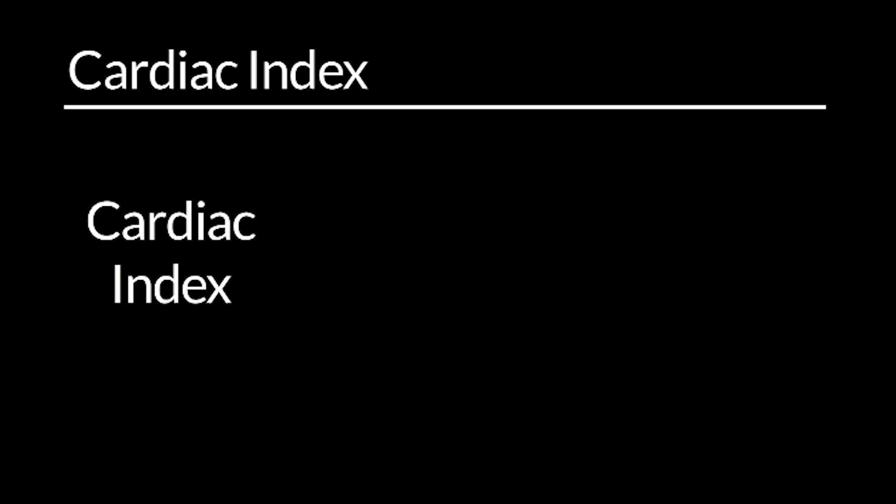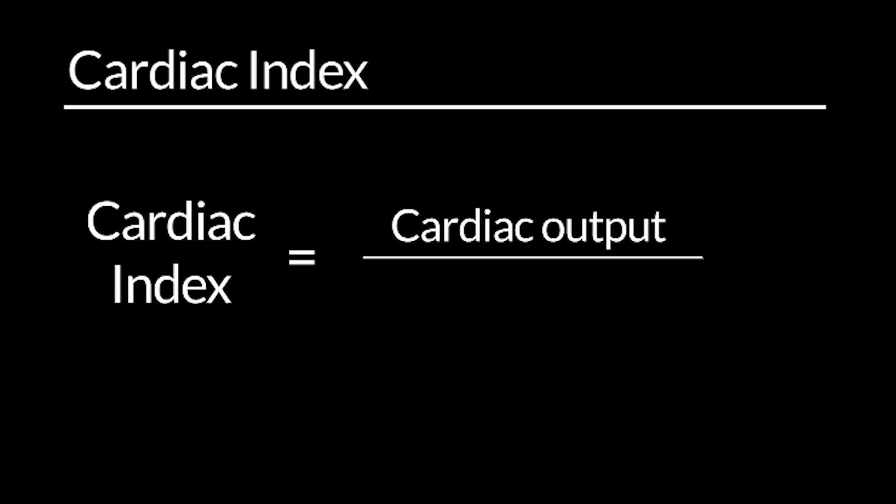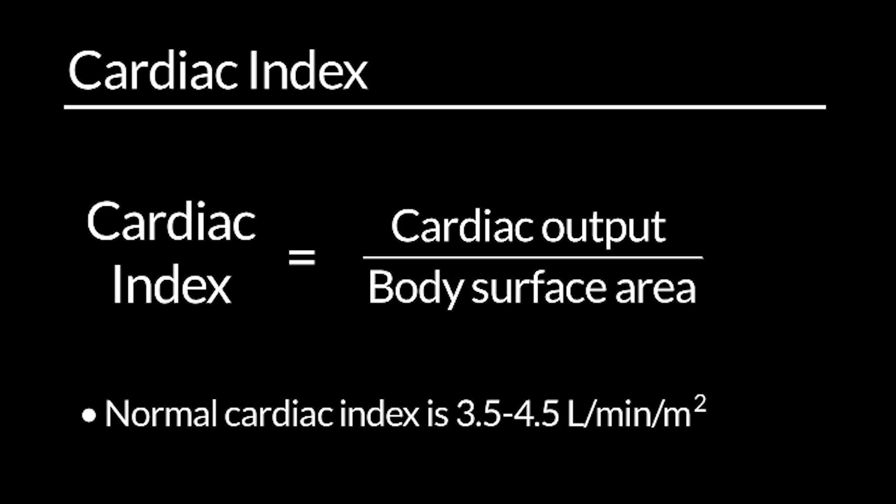Cardiac index, most often used in children, is obtained by dividing the cardiac output by the body surface area. A normal cardiac index is 3.5 to 4.5 liters per minute per meter squared.